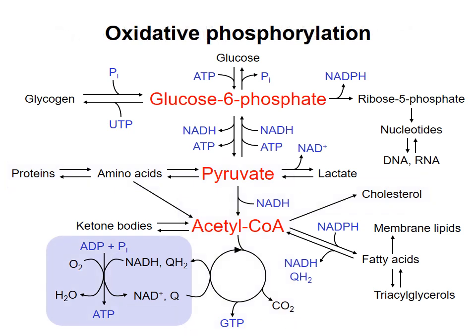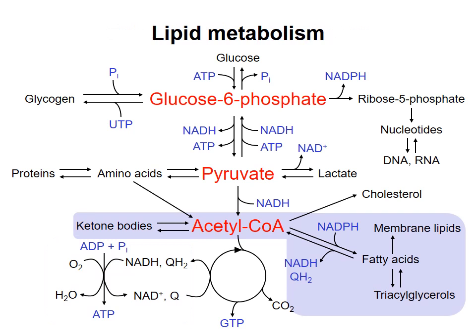In the topic on oxidative phosphorylation, we'll see how electrons from glycolysis and the citric acid cycle are used to synthesize ATP. And then we'll look at synthesis and breakdown of fatty acids, and talk about the role of ketone bodies in energy metabolism.